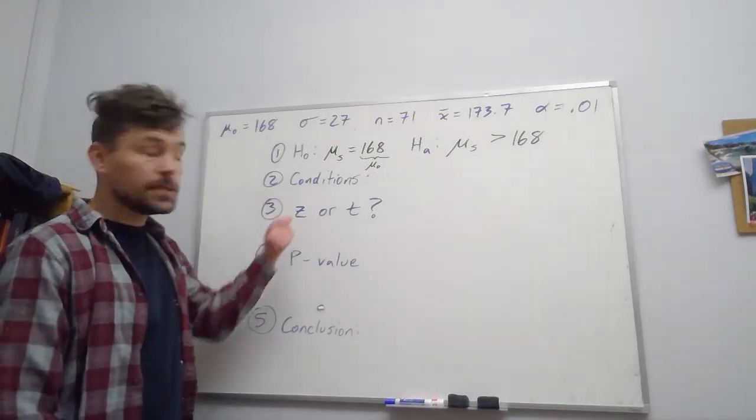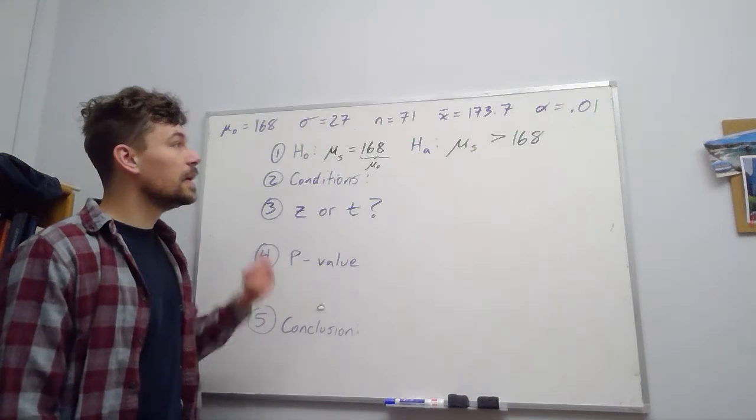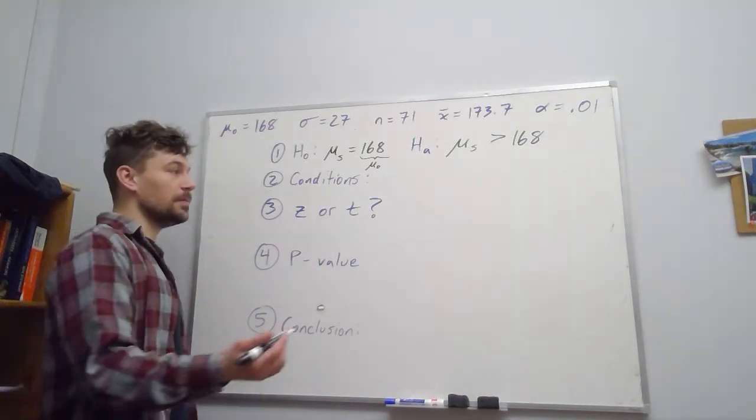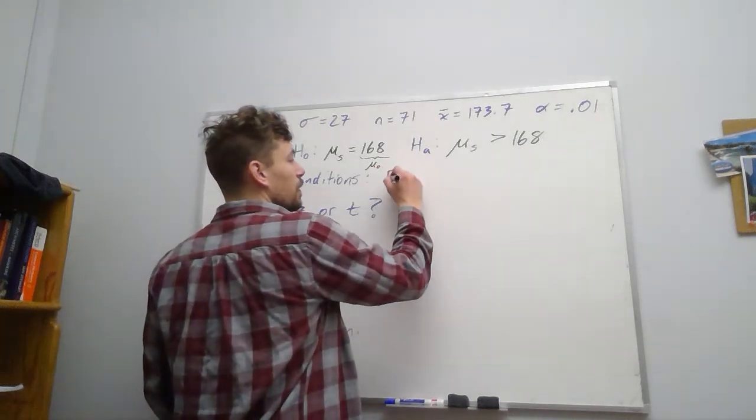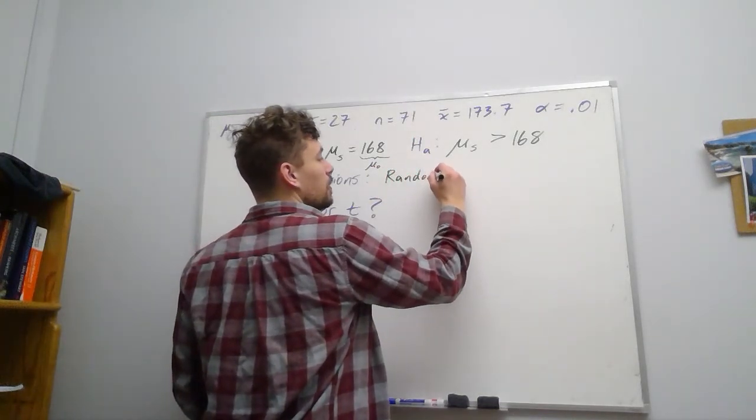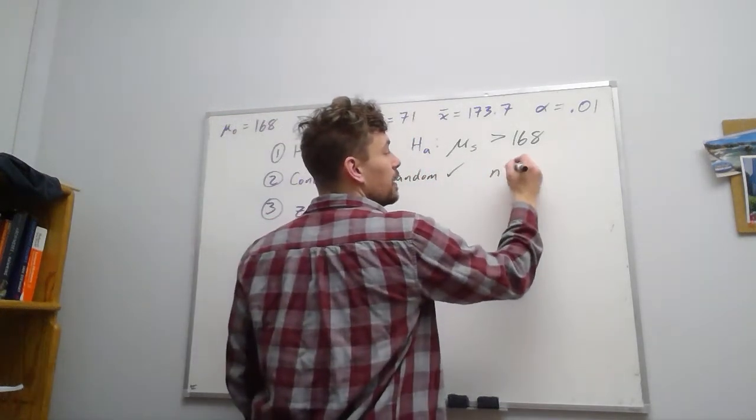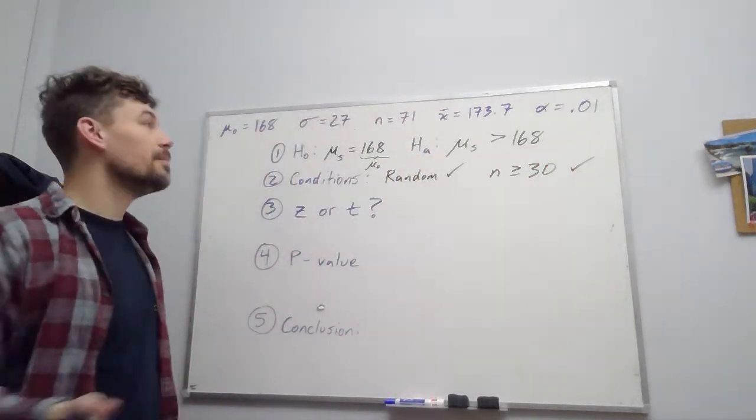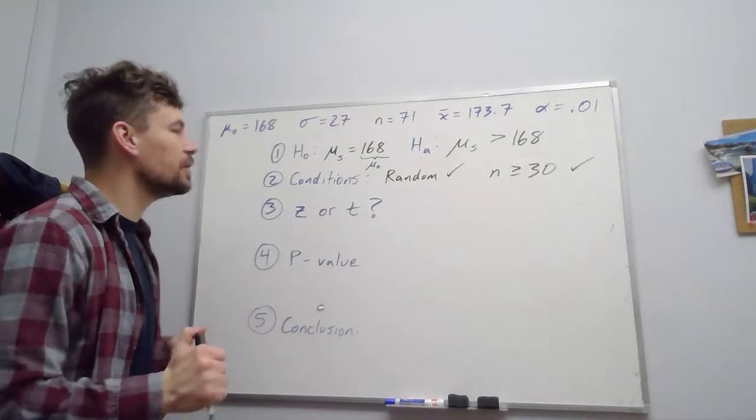We want to make sure our conditions are met secondarily. So we want to say, okay, did we have a random sample? Yes. So a random sample? Yes. Is n at least 30? Yes. So our conditions are met, right? n was 71. So we're in good shape.